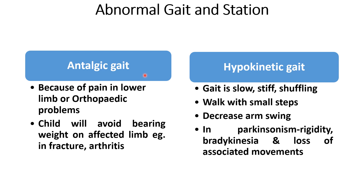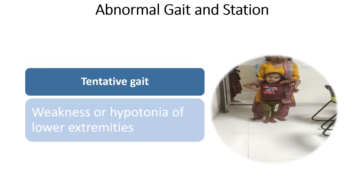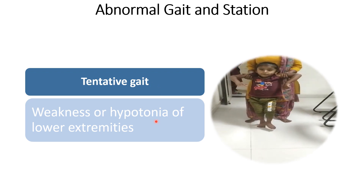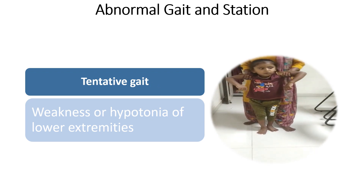Some other gaits include antalgic gait, seen whenever the child has pain or fracture in the lower limbs. Hypokinetic gait is seen in adults suffering from Parkinson's disease, in which gait is slow, stiff, shuffling, with small steps, decreased arm swing, rigidity, bradykinesia, and loss of associated movements.